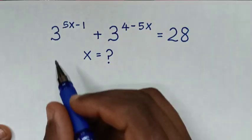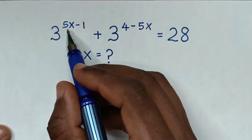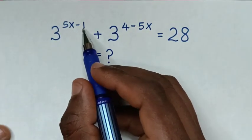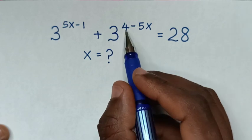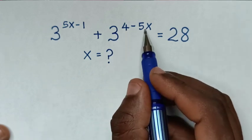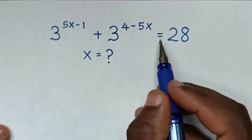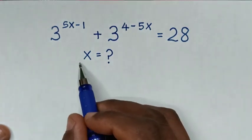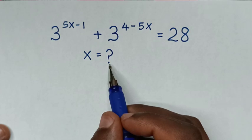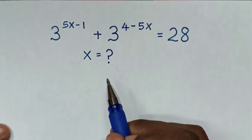Hello. How to solve 3 power (5x minus 1) plus 3 power (4 minus 5x) is equal to 28, to find the value of x from this equation.